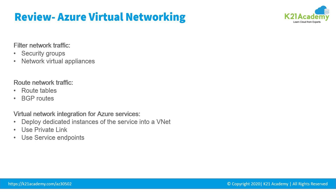An NVA is a VM that performs a network function such as a firewall, WAN optimization, or other network function. For routing network traffic, Azure routes traffic between subnets, connected virtual networks, on-premise networks, and the internet by default. You can implement a custom route table with routes that control where traffic is routed for each subnet — similar to the route table in Linux or Windows operating systems, where you can configure the next hop. You can also use BGP routes: if you connect your virtual network to your on-premise network using Azure VPN gateway or ExpressRoute, you can propagate your on-premises BGP routes to virtual networks.